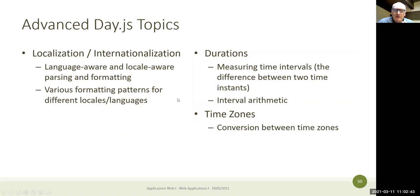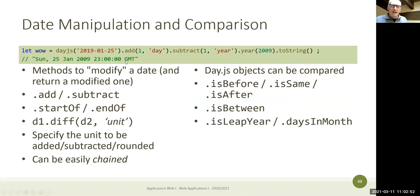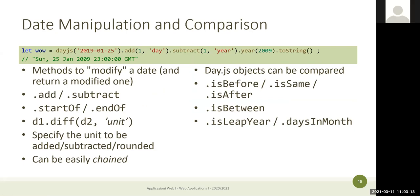To summarize: we'll use day.js, and dates in the database will be stored as ISO strings. Any computation we do will use day.js objects. Strings will be used to print or store data in the database or transfer over the wire in JSON. Internally we use objects so that all date arithmetic is available.